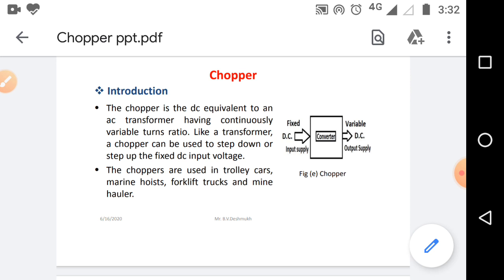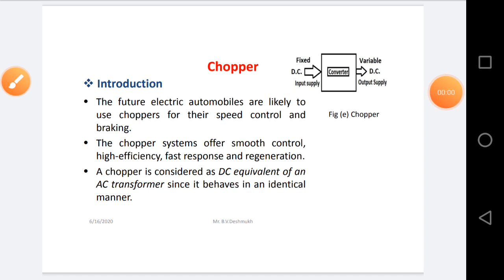Chopper circuits are used in trolley cars, marine hoists, and so on. Future electric automobiles are likely to use choppers for speed control and braking systems. The Chopper system offers smooth control, high efficiency, fast response, and regeneration. A Chopper is considered the DC equivalent of an AC transformer since it behaves in an identical manner.